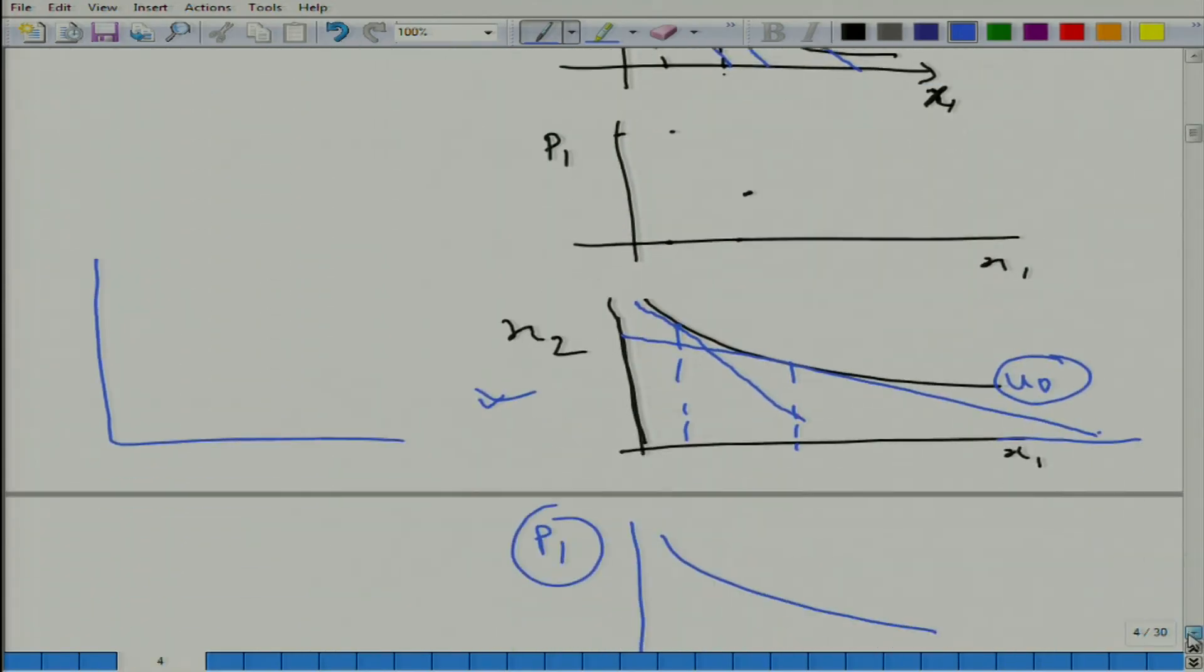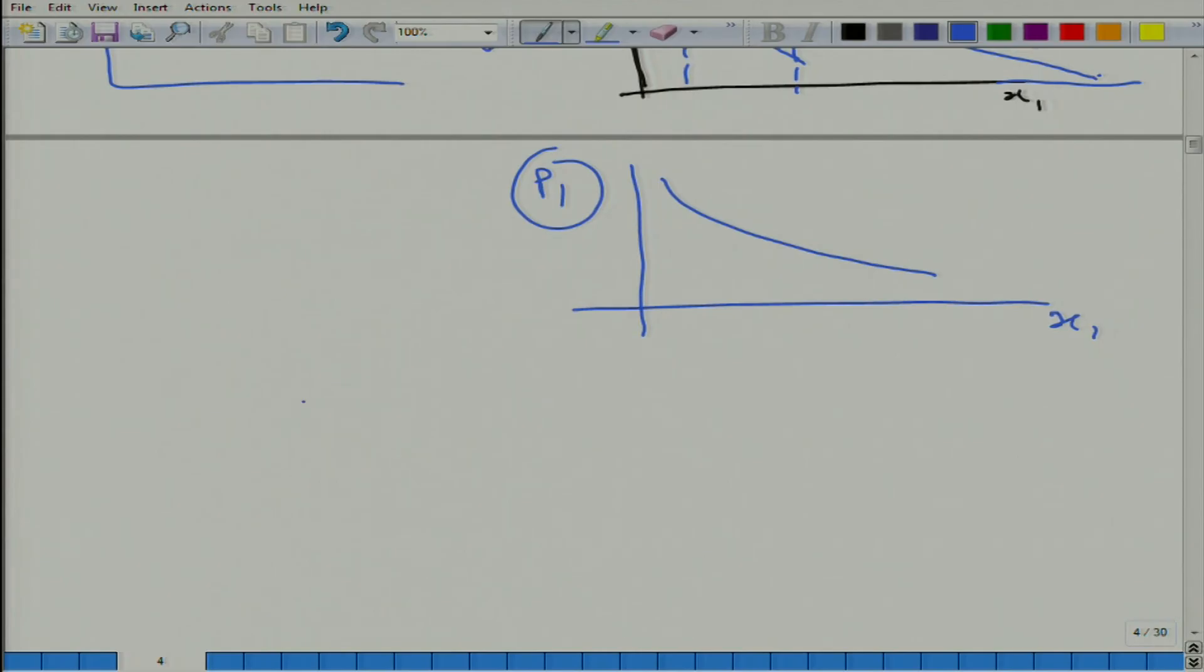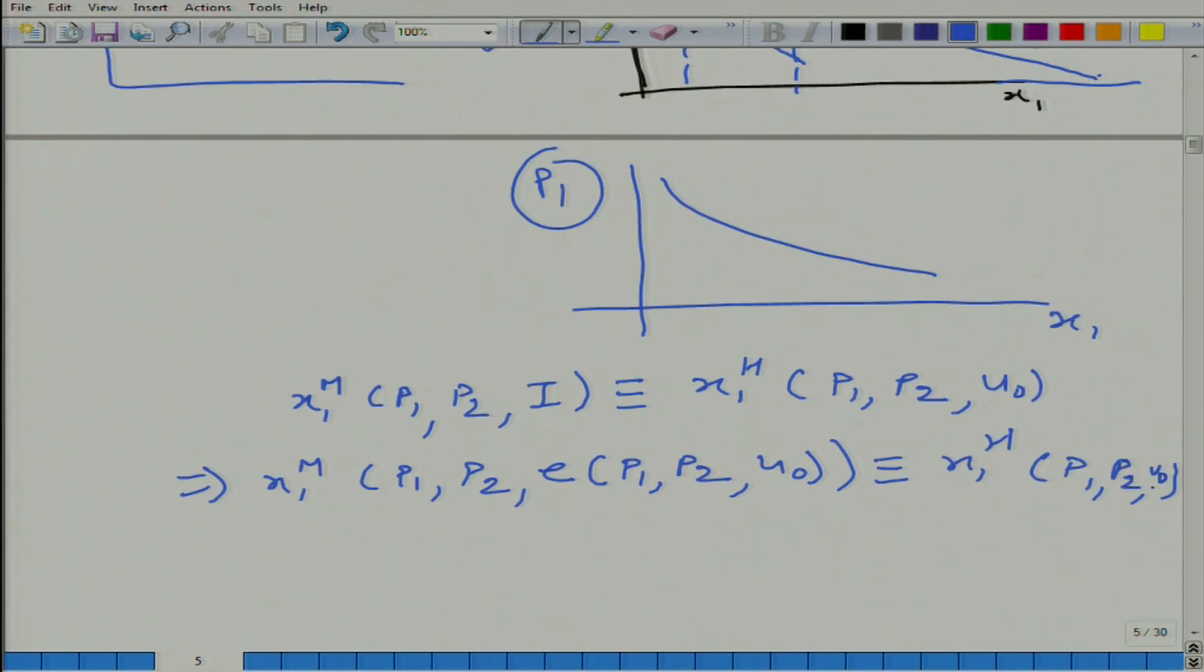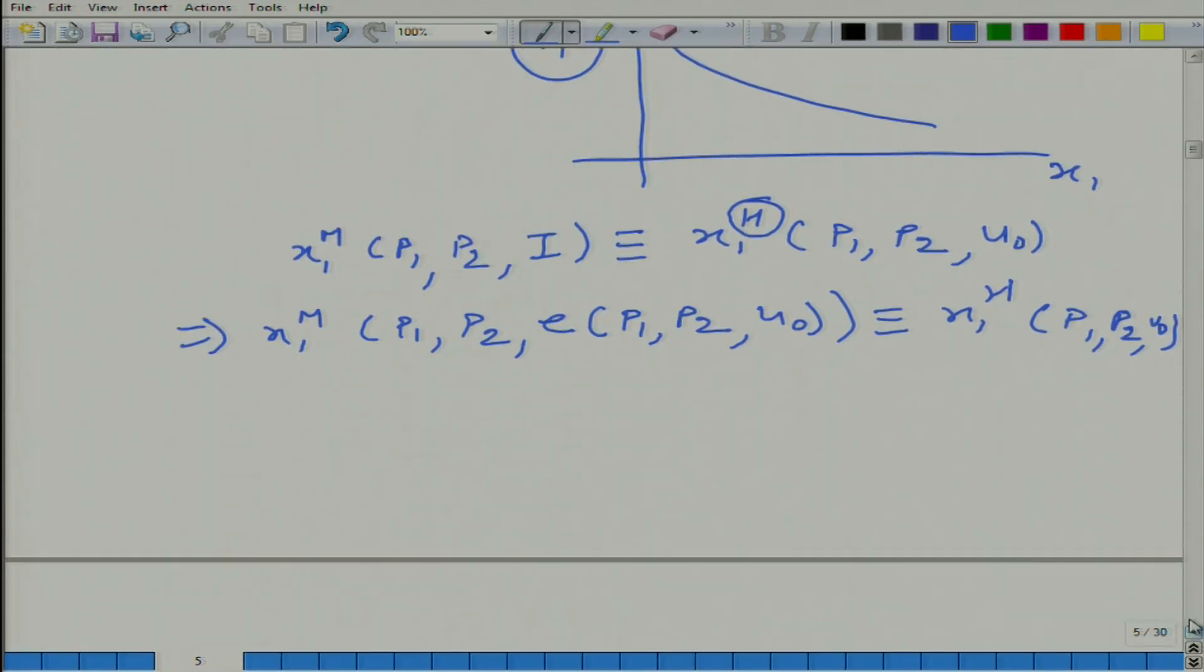So, now the graph I think should be clear to you. So, again coming back to the equation that I wrote earlier: x1^M(p1, p2, I) - it is an identity and it is equal to - here I can write u0 and then I can say that this is equal to x1^H(p1, p2, u0). Let me repeat again: if you see a letter c here rather than h, do not get confused. H represents Hicksian and c means compensated - they are one and the same, just two different names.